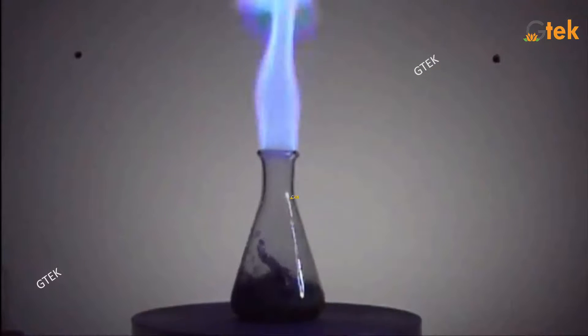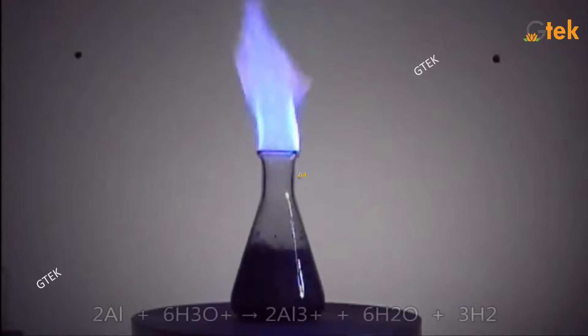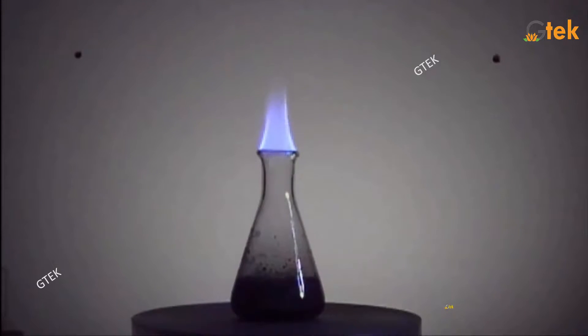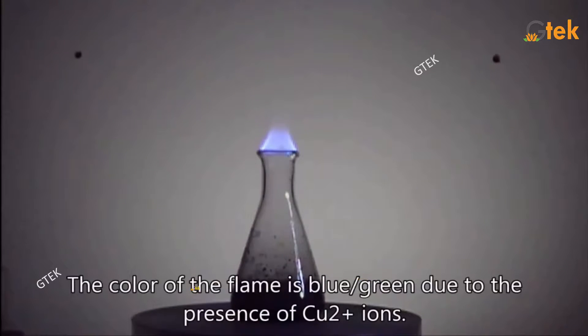You are able to see the hydrogen gas starting to come out. Once I try to burn it, you are able to see a permanent flame is created. Aluminum with HCl will give aluminum chloride and hydrogen. This is how a flame is created. The color of flame is blue and green due to the presence of Cu2+ ions.